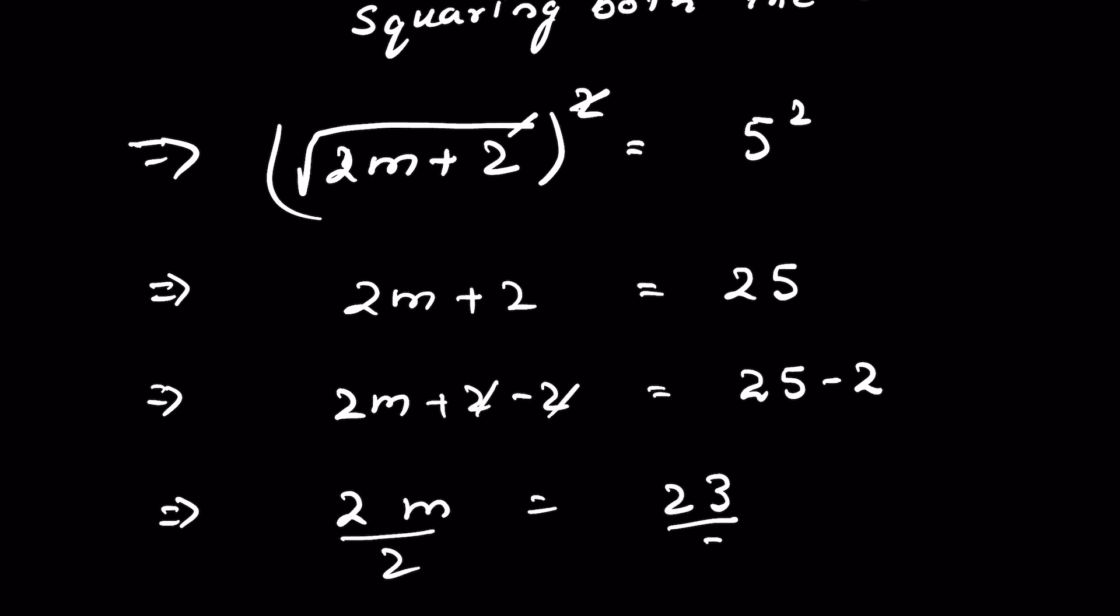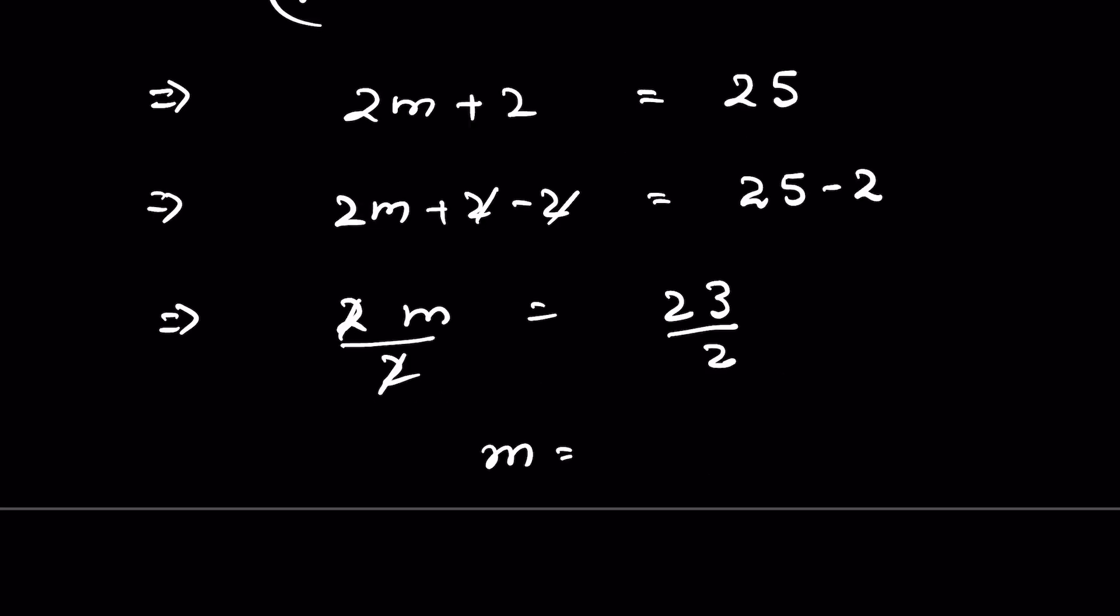Divide both sides by 2. The 2s cancel. m equals 23 upon 2. This is the answer.